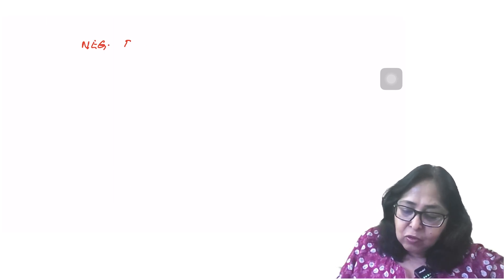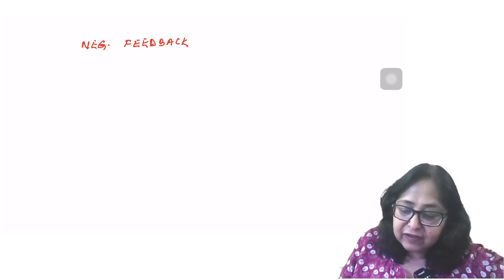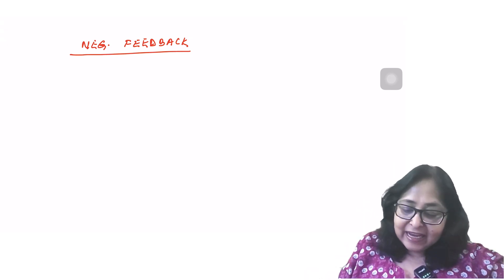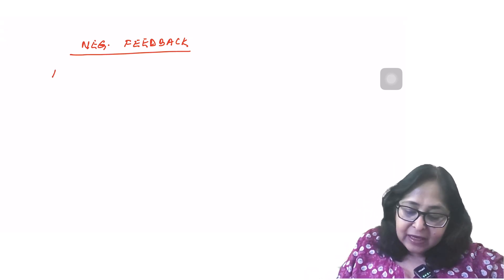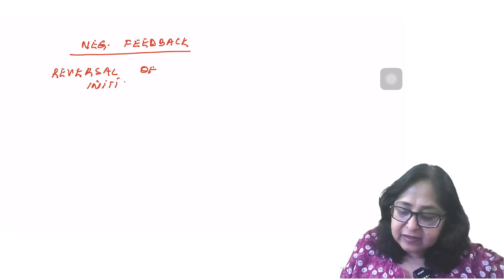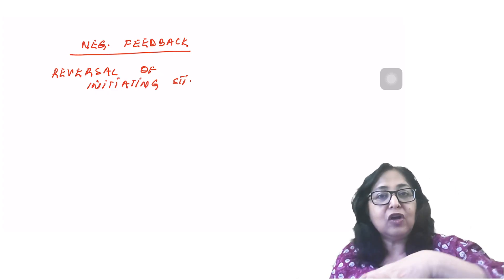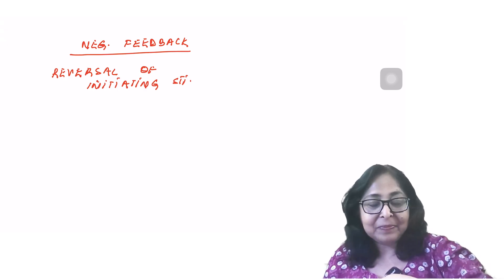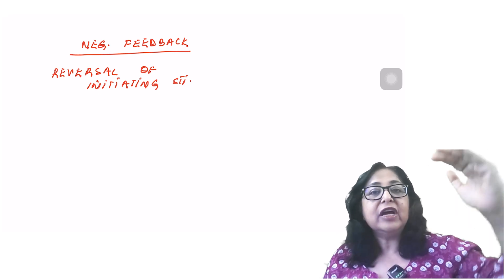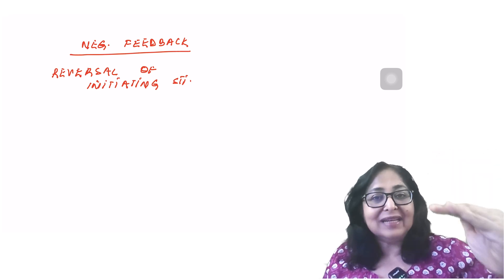So what is negative feedback? Please remember that most controlled systems in the body function on negative feedback. Negative feedback is a stabilizing mechanism and in negative feedback there is a reversal of the initiating stimulus. If the blood pressure rises, the baroreceptors will reduce the sympathetic discharge to reverse, to bring down the blood pressure.